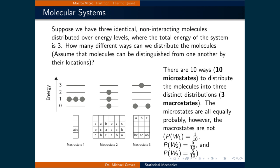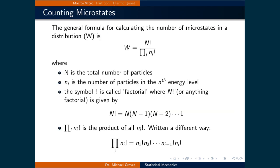Since there are ten ways to arrange the molecules so that the total energy is 3, the most probable macrostate is number 2. The general formula for calculating the number of microstates in a distribution is w = N! divided by the product of ni!, where N is the total number of particles and ni is the number of particles in the nth energy level. The factorial of n is given by n times (n−1) times (n−2), down to 1. Note that 0! is also equal to 1. The large pi symbol means the product of all ni!.